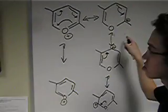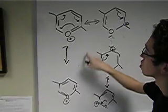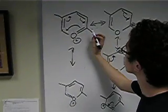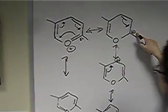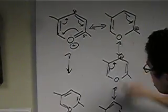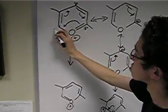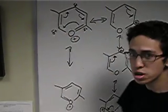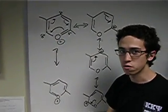Now, we can use these resonance forms to determine reactivity. Looking at the original structure, we can tell that this carbon is slightly positive. As of here, this carbon is slightly positive. This will come in handy when predicting reactivities later on in the semester.